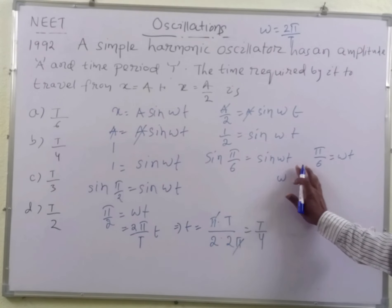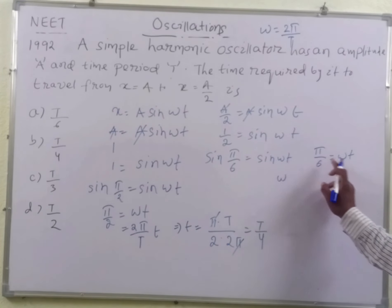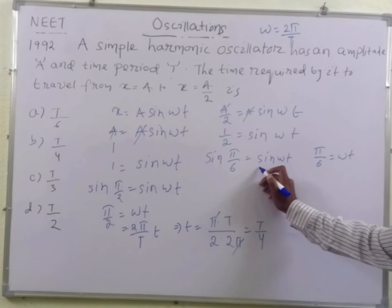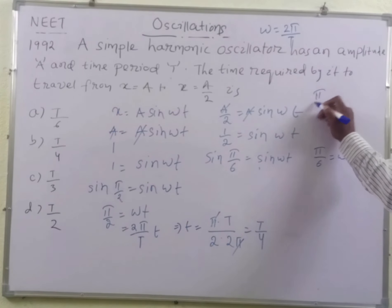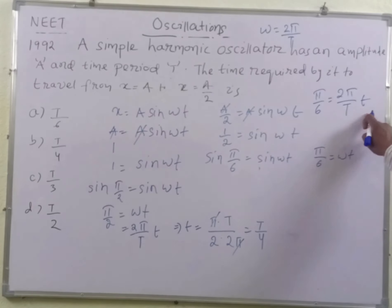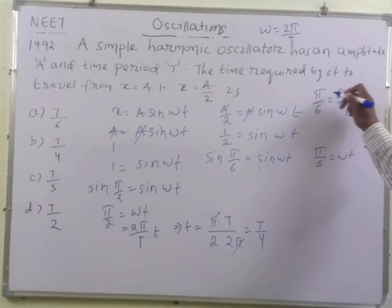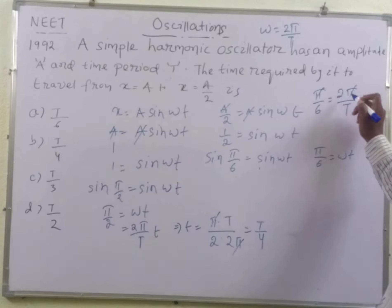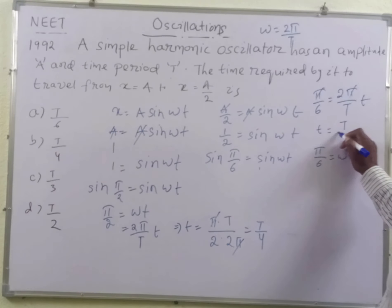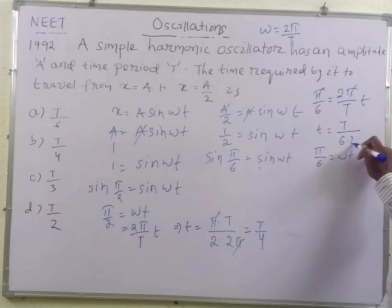What is omega, students? Omega is 2 pi by T. So we may write pi by 6 is equal to 2 pi by T multiplied by T. The pi by pi cancels, and T is equal to pi by 6 divided by 2, which gives T equal to T by 12.